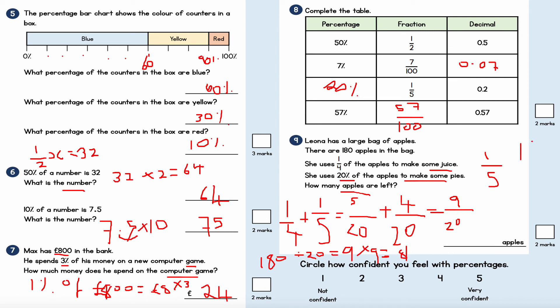Taking 81 from 180 will tell me how many apples are left. Column subtraction: 180 take away 81 — zero take away one, I borrow, giving nine; seven take away eight, I borrow, giving nine — the answer is 99. So 99 apples are left. That's a typical exam-style question you may see on a Key Stage 3 paper.